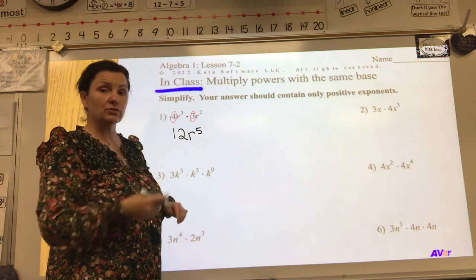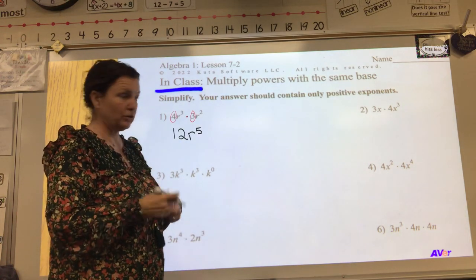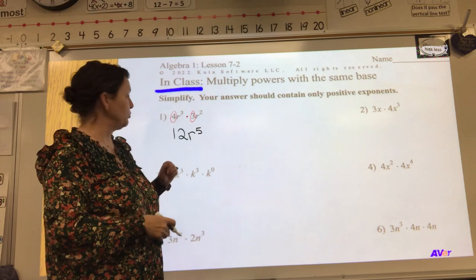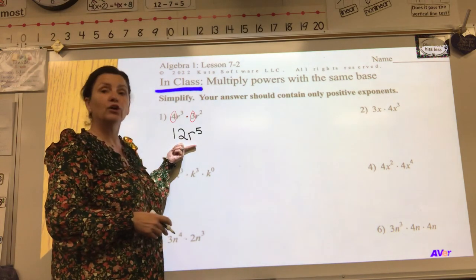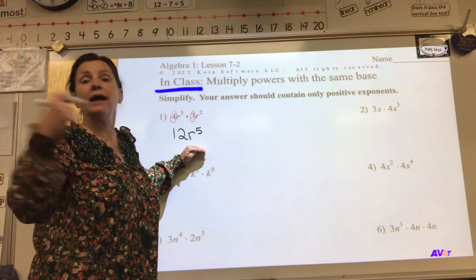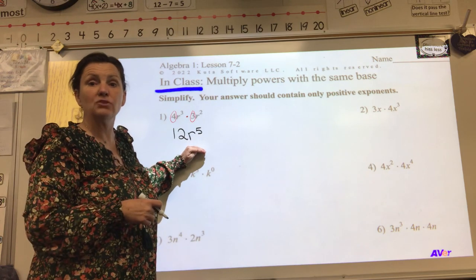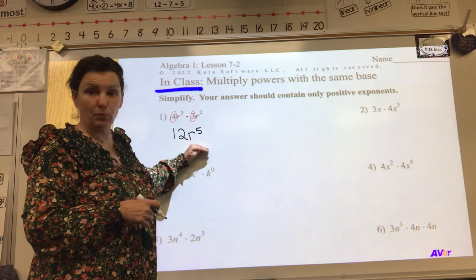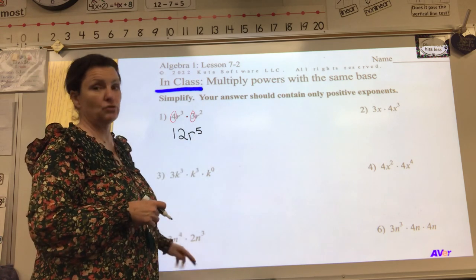So our new answer, our simplified answer using the product rule, the multiply rule, is 12 R to the fifth. Now these notes have been posted on Canvas, and I also obviously gave a hard copy to every kiddo that was in class. So if you're at home, definitely print this because these are your in-class notes.